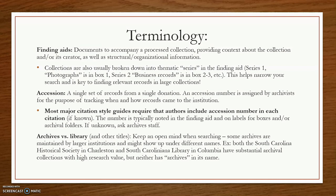One final note on terminology: you will often see archives and library — especially special collections libraries — used interchangeably. Some archives are nestled within larger institutions and may show up with a different name. For example, both the South Carolina Historical Society in Charleston and the South Caroliniana Library in Columbia, South Carolina have wonderful archival collections with high research value, but neither is technically called an archives. Be aware that you might be looking for something that is a library, an archive, a museum, a historical society, or a genealogical society — read what each institution says about their own collections.